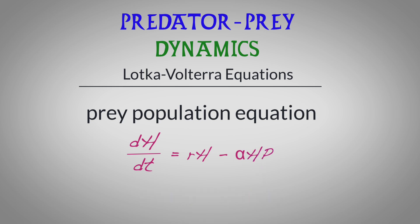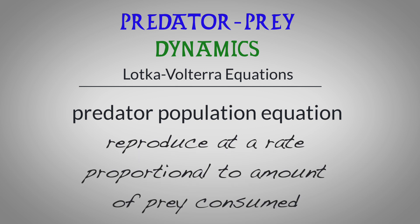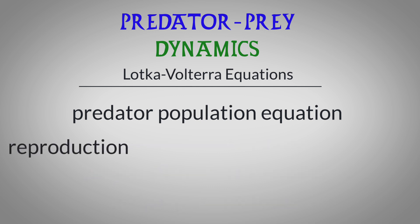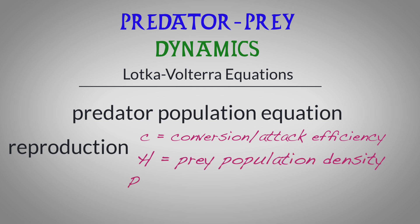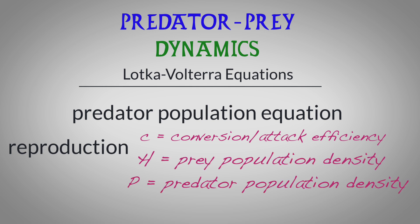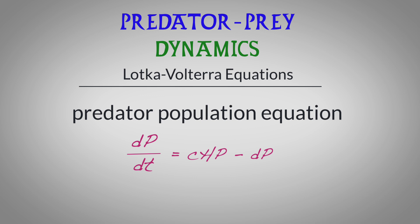The predator population, on the other hand, depends entirely on prey for growth. Predators reproduce at a rate proportional to the number of prey they consume, represented by variable C — the conversion efficiency — which is the rate at which predators can kill prey and convert the energy from that prey into offspring, who then become new predators. H is the prey population density and p is the predator population density. Simultaneously, predators experience a natural mortality rate expressed as variable d. These all combine into the equation: dP/dt equals C multiplied by Hp minus d multiplied by p.